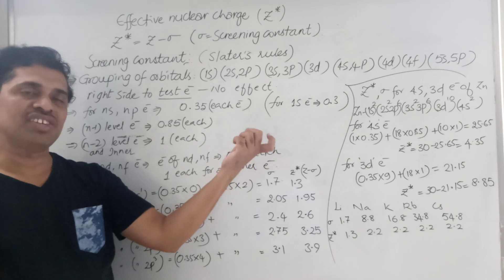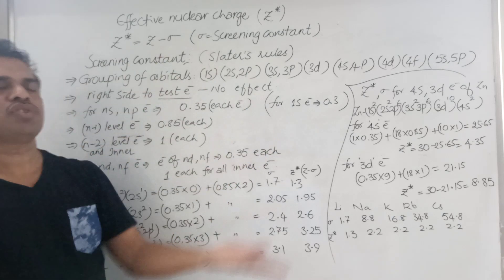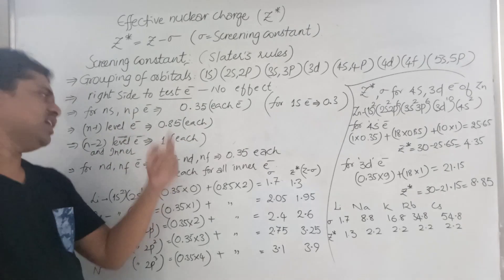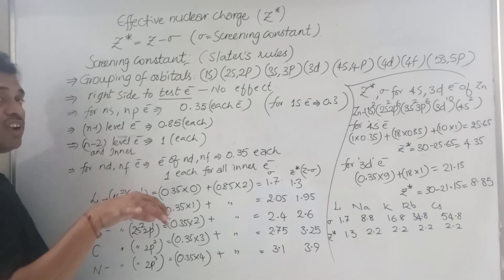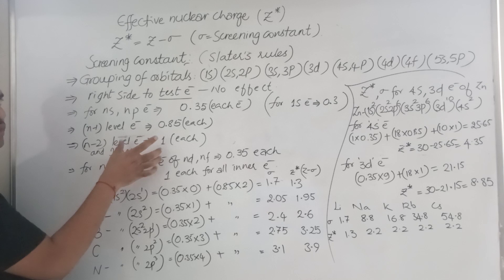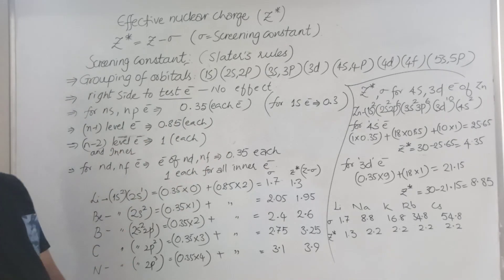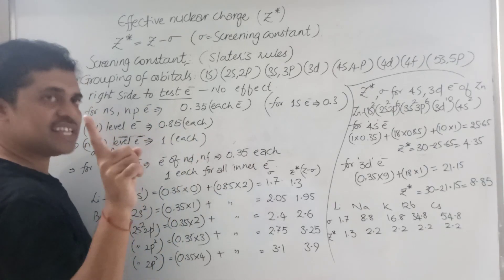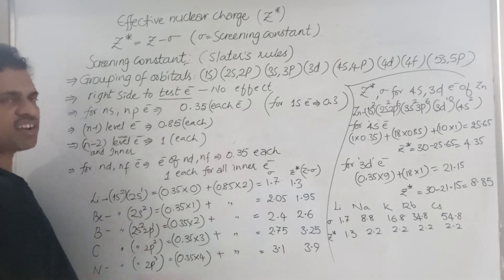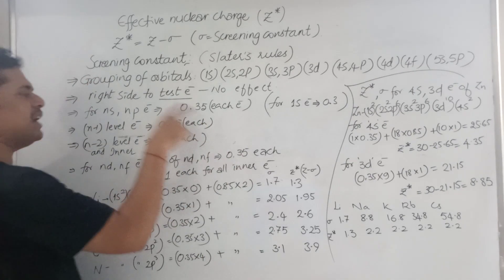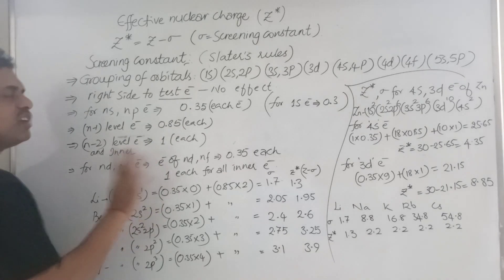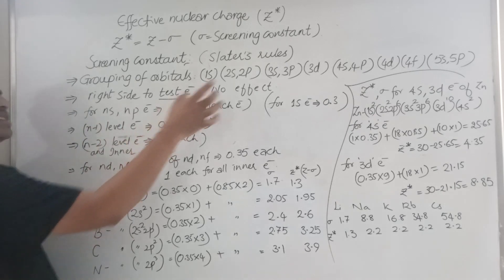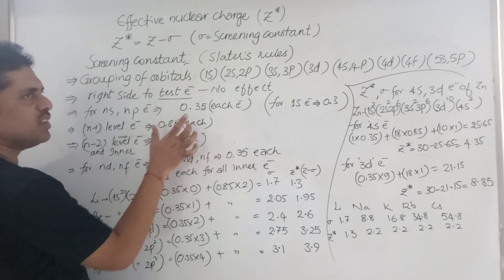To summarize for s and p electrons: 0.35 for outermost shell electrons (excluding the test electron), 0.85 for n-1 level electrons, and 1 for all electrons in n-2 and deeper levels. For d and f orbital electrons, the rule is even simpler: 0.35 for each electron in the same d or f orbital (excluding the test electron), and 1 for all inner electrons — there is no 0.85 distinction. This full-value-1 rule applies only when the test electron is in a d or f orbital.